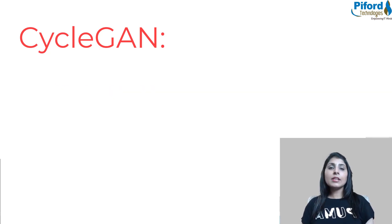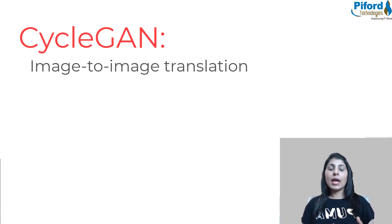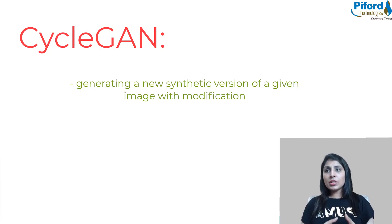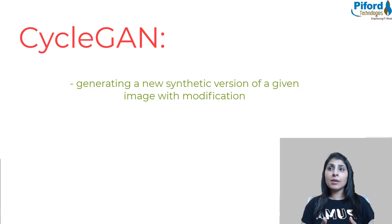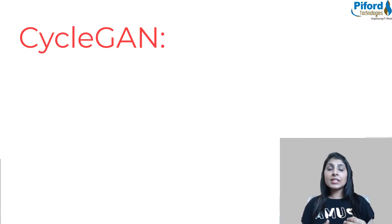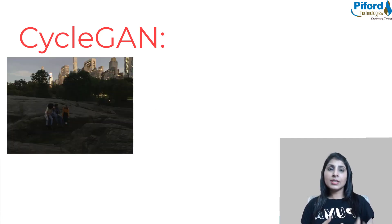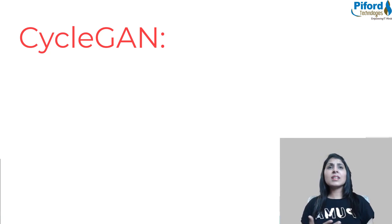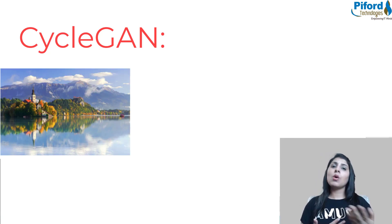CycleGAN is used for image-to-image translation, which simply means generating synthetic images — artificially manufactured images. Image-to-image translation means generating a new synthetic version of a given image with specific modifications. For example, translating a night scene into a day scene, translating a sunny day into a rainy day, or translating a summer landscape into a winter landscape.